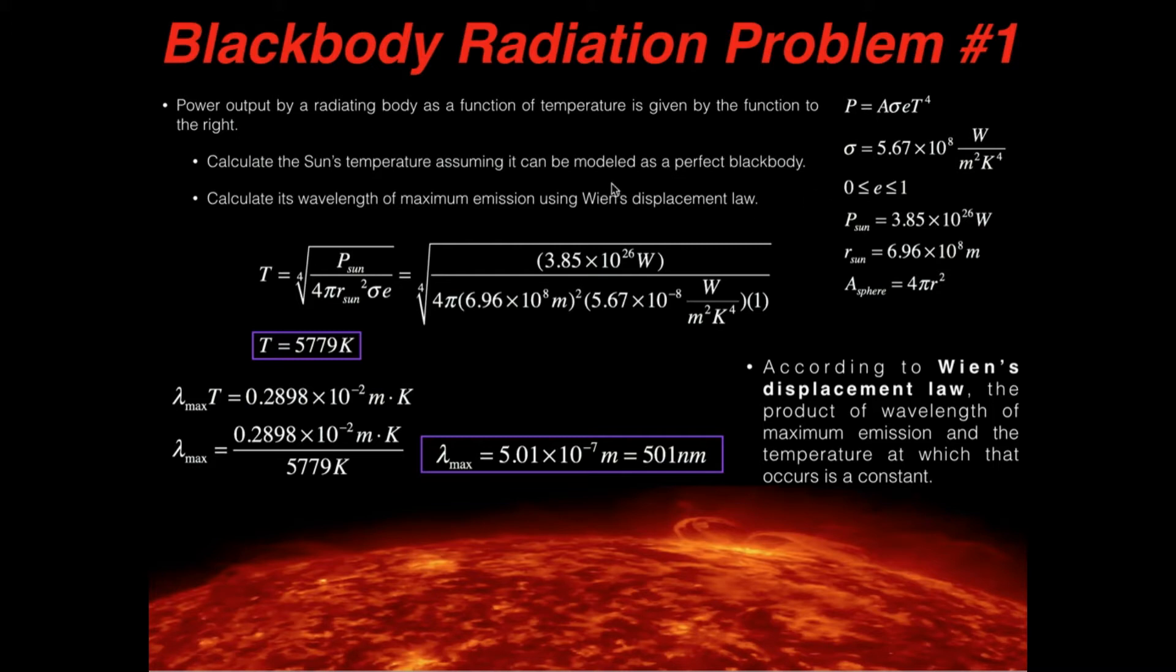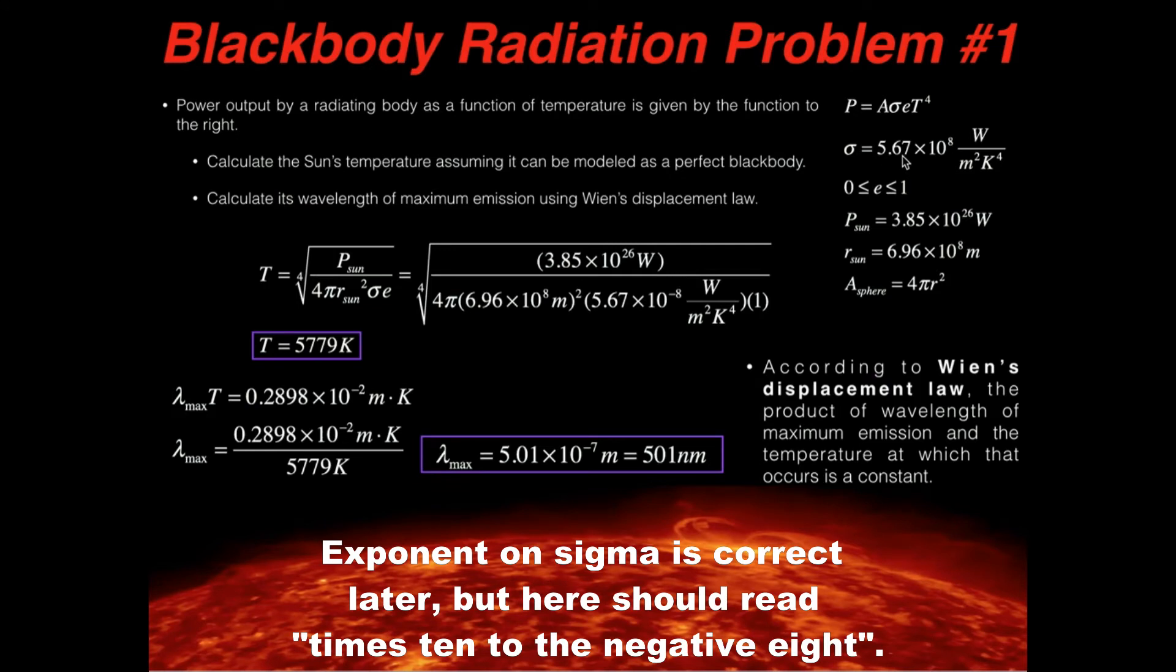All right, so here's what we're going to do. We've got the power output of a radiating body as a function of temperature given by the function to the right. So the power output of any black body is given by A times sigma times E times the temperature to the fourth power. All right, so first of all, what is sigma? Sigma is a constant, okay? It's 5.67 times 10 to the minus eighth watts per square meter per Kelvin to the fourth.